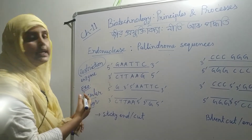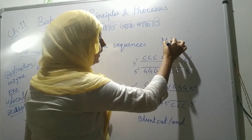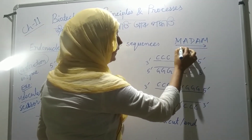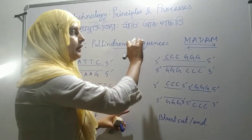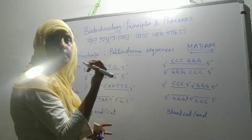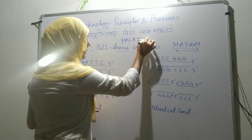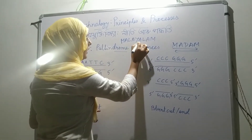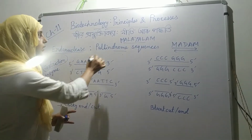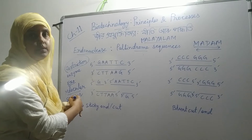What is a palindrome? For example, take the word 'madam' — M, A, D, A, M. This is an expression of the palindrome sequence. Similarly, 'malayalam' — M, A, L, A, Y, A, L, A, M — which also means a palindrome sequence. You can compare the palindrome sequence reading forward and backward; it reads the same.